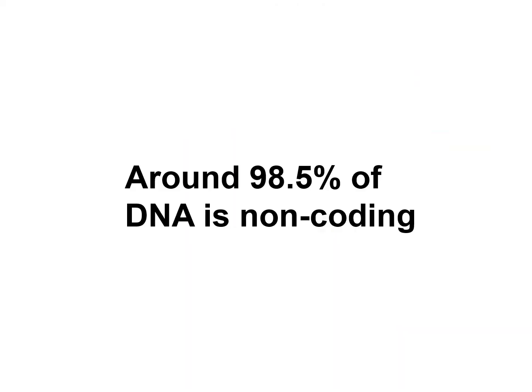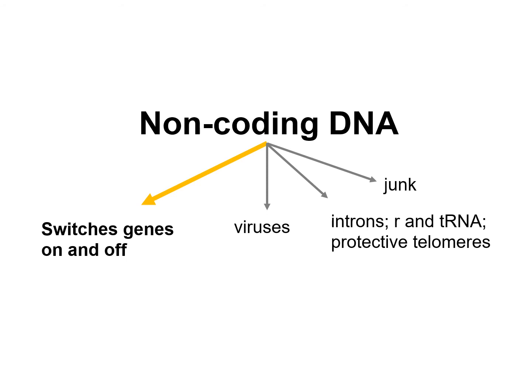Now, actually a lot of our DNA — around 98.5% — is non-coding. That means it doesn't actually code for a protein. So what does it do? Well, there are four things it does. Some of it is just junk. Some of it you can learn more about at A-level. Some of it is due to viruses. But the most important one we need to know about is that some of this non-coding DNA actually switches genes on and off.